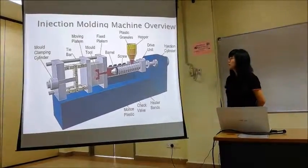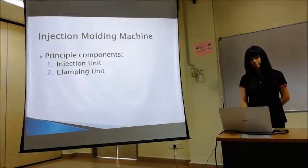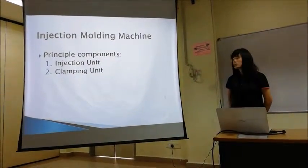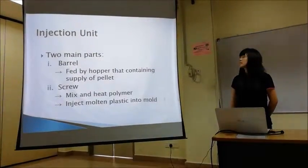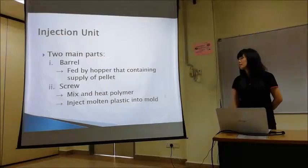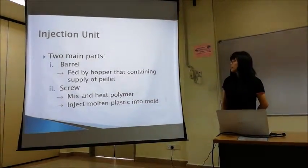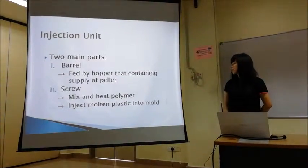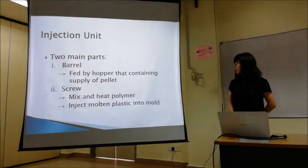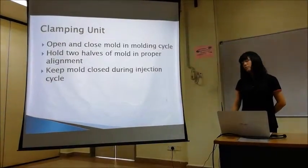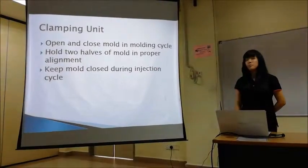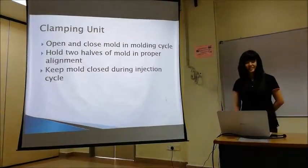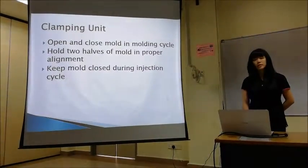This is the overview of the injection molding machine. Inside the injection molding machine there are mainly two principal components: the injection unit and the clamping unit. Inside the injection unit there are two main parts: the barrel and the screw. The barrel is fed by a hopper containing a supply of plastic pellets. The screw mixes and heats the polymer and helps inject the molten plastic into the mold. The clamping unit helps to open and close the mold in the molding cycle, holds the two parts of the mold in proper alignment, and keeps the mold closed during the injection cycle.